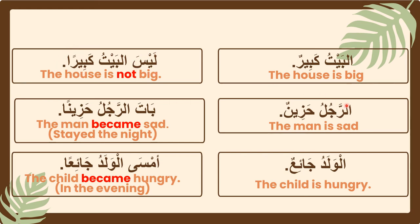Next: الرجلُ حزينٌ — الرجل is مُبْتَدَأ and حزينٌ is خَبَر. But when بَاتَ enters the sentence, الرجل changes from مُبْتَدَأ to إسمُ بَاتَ and حزينٌ changes to خَبَرُ بَاتَ. Notice again it changes from ضَمَّتَيْن to فَتْحَتَيْن, because when كان وأخواتها enters the sentence, the خَبَر changes to فَتْحَتَيْن.